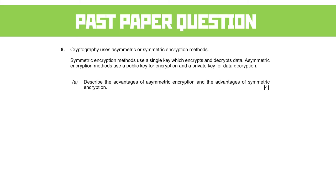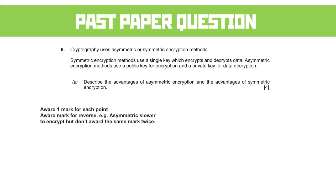Part A: describe the advantages of asymmetric encryption and the advantages of symmetric encryption. Four marks here, so four clear points we need. The mark scheme gives a mark per point and will allow the reverse argument. For instance, if we said asymmetric was slower to encrypt, we'd get the mark if the mark scheme said symmetric is faster to encrypt, but we wouldn't get the mark for both of them.